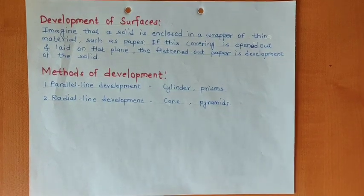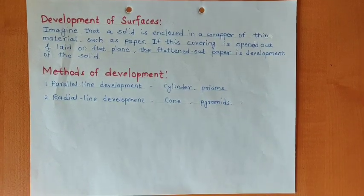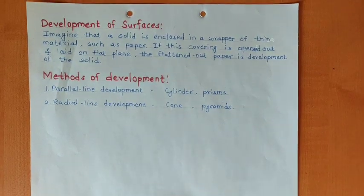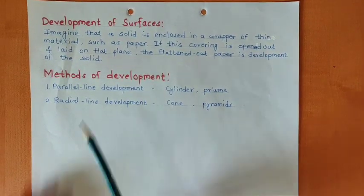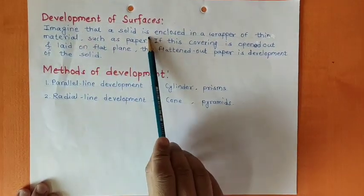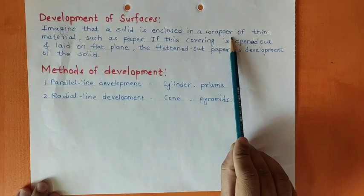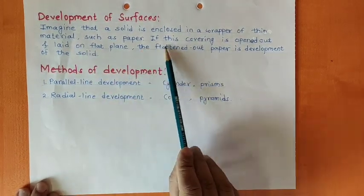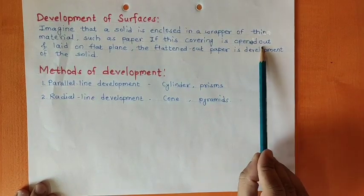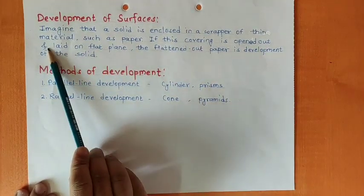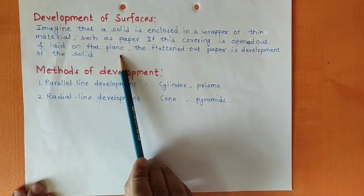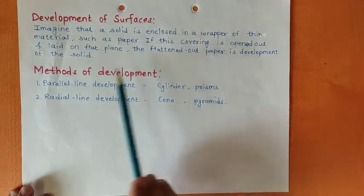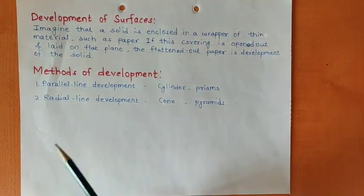Without wasting much time, we will directly start with the definition and understanding what actually is development of surface. Imagine that a solid is enclosed in a wrapper of thin material such as paper. And if this covering is opened out and laid on a flat plane, the flattened out paper is the development of that solid.